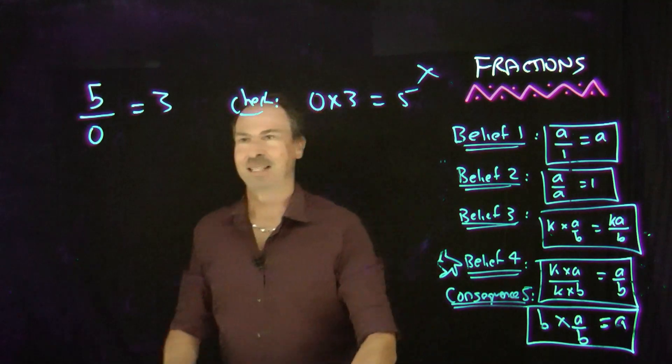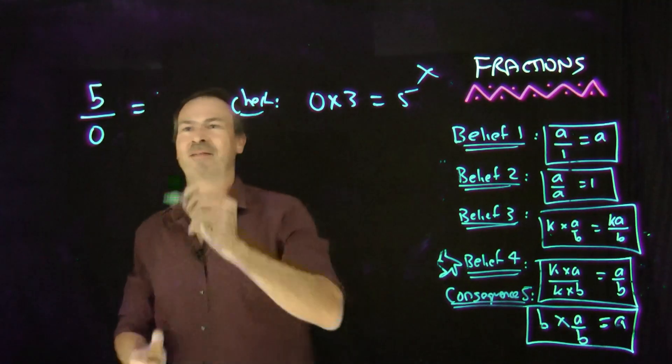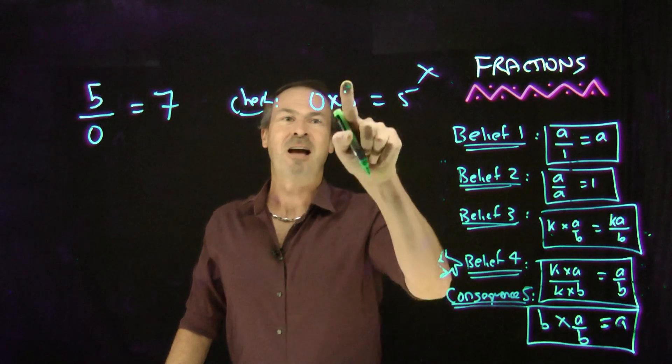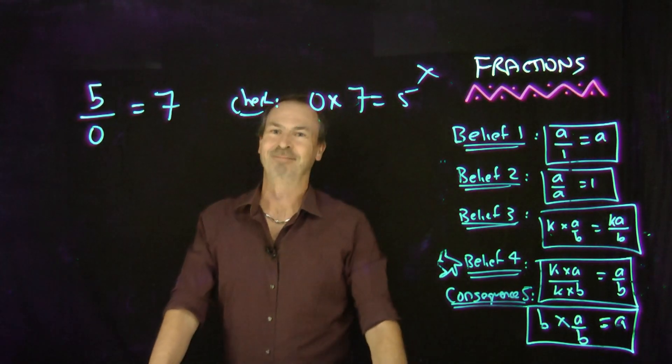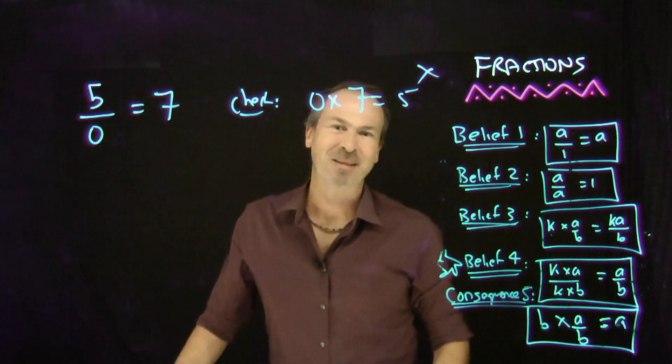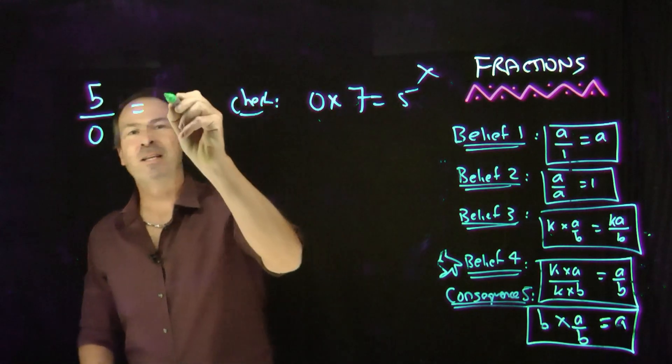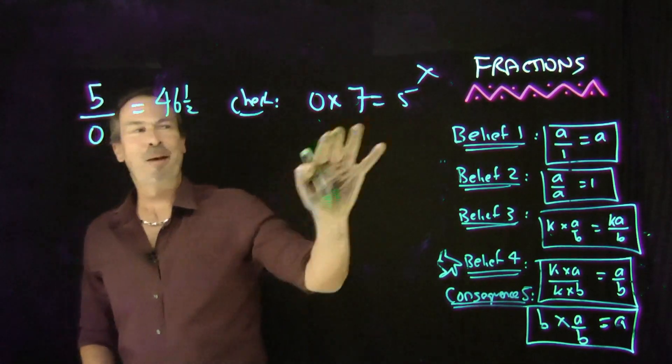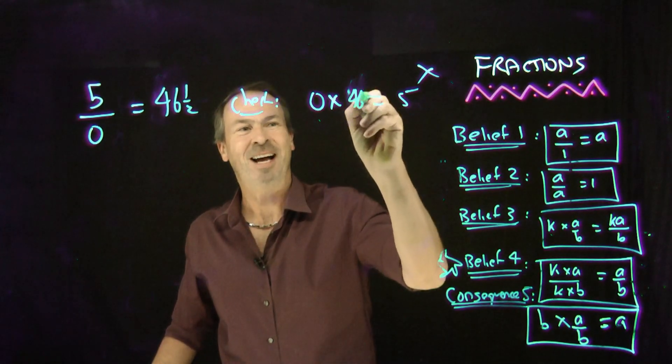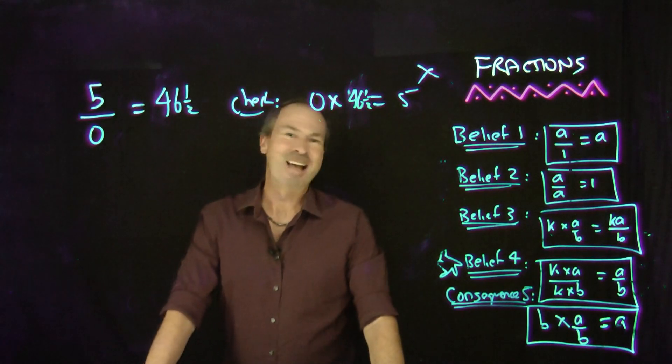Okay, wrong guess. I'm going to change it. Because I meant to actually write 7. That was going to be my guess. Does that pass my check? 0 times 7. Does that equal 5? Failed. Didn't pass my check. Okay, silly me. I really meant to write 46 and a half. Does that pass my check? 46 and a half. No, it doesn't.